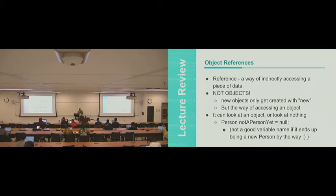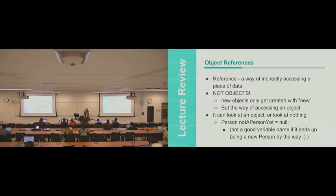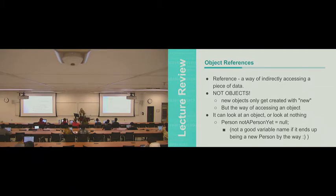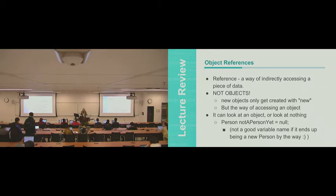So, object references. References are the way that we indirectly access pieces of data - this is how we're referring to the actual object that we're creating. Ultimately, stuff comes down to zeros and ones, but we're creating representations such as triangles or cats or animals. We have to actually access that memory to get to the zeros and ones representing the objects, and we do it through references. Objects are only created when you use the new keyword. On the left-hand side is how we access the object, and new on the right-hand side is what actually creates the object.